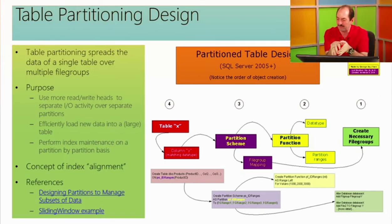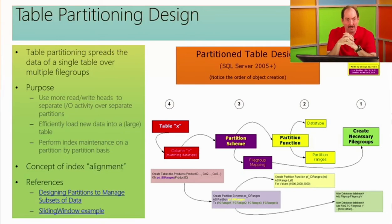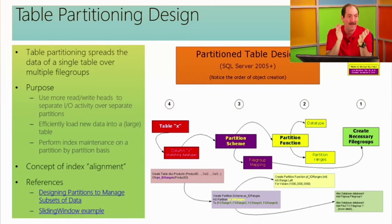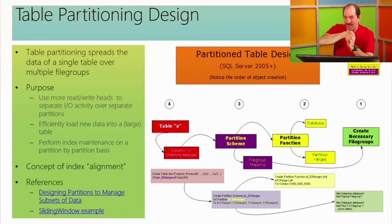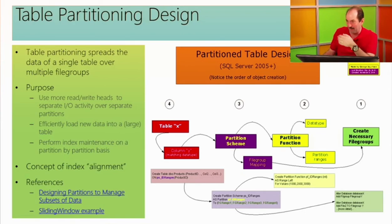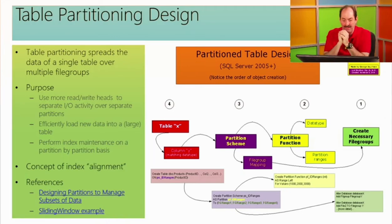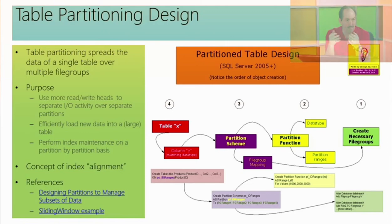The diagram shows the primary building blocks for creating a table divided among file groups: file groups, a partition function, a partition scheme, and finally the table that leans on all the other dependencies. The purpose is to spread — maybe one partition holds many gigs of archive data you're not going to change, and another partition is where you load regular data. You can also have index maintenance performed on a partition-by-partition basis.